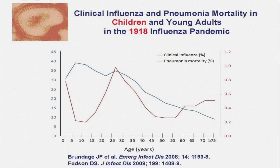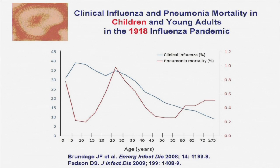Here is the age distribution of mortality—clinical and pneumonia mortality. The blue line is the people who got flu, and the red line is people who died of pneumonia. You can see this peak of pneumonia is right at about 20 to 25 years of age. Those were the people with the healthiest immune systems, and it was the inflammation that was actually setting up the infection that killed them.